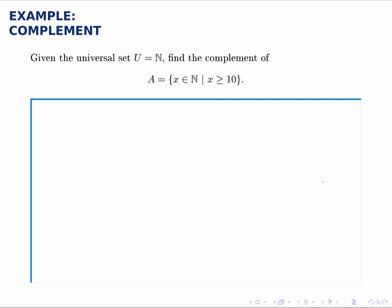Given the universal set of the natural numbers, find the complement of this set A, where A is the set of natural numbers that are greater than or equal to 10.